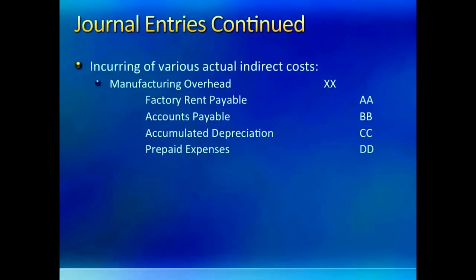The next journal entry shows actual costs incurred on various manufacturing overheads like rent, depreciation, etc. Since they all go to the debit side of the T-account, manufacturing overhead account is debited and various indirect cost accounts are credited.